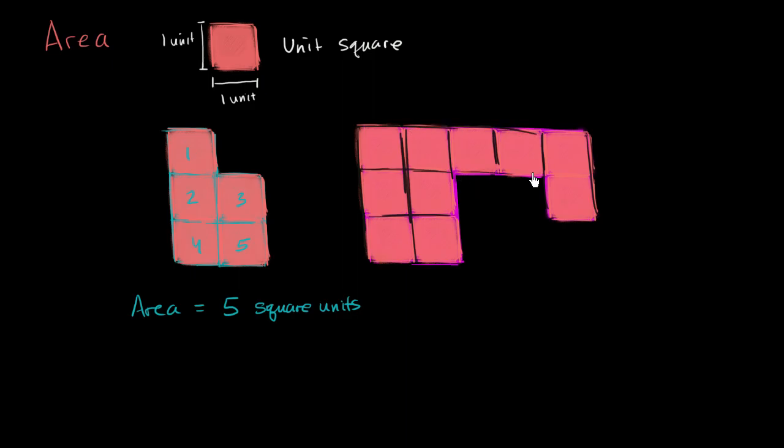Between my unit squares. So I think there you go. And we can count them. And we have one, two, three, four, five, six, seven, eight, nine, ten.